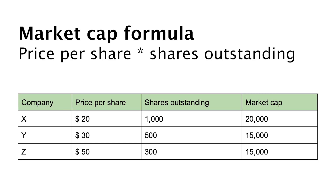So how do you calculate the market cap? It's quite easy — it is calculated by multiplying the price of a stock by its total number of outstanding shares. For example, the share price for company X is $20 and the company has 1,000 shares outstanding, giving a total market cap of $20,000.